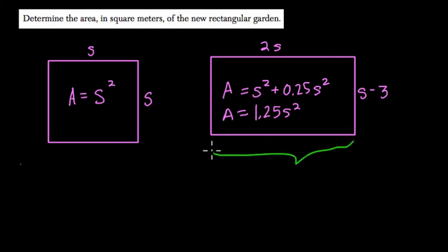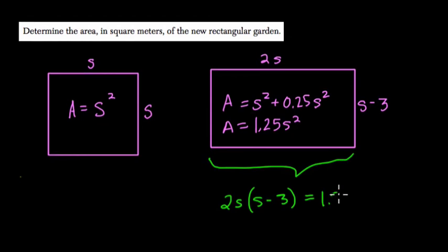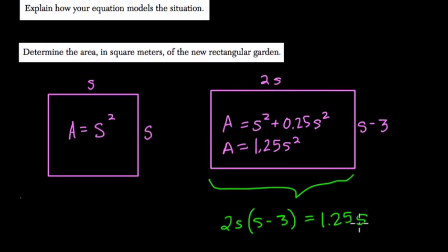However, in this other garden right here, in this garden, we know that 2S, one dimension, times the other, times S minus 3, would have to equal the area, which we just said was 1.25 S squared. So this equation right here, we could use it to solve for the value of S.